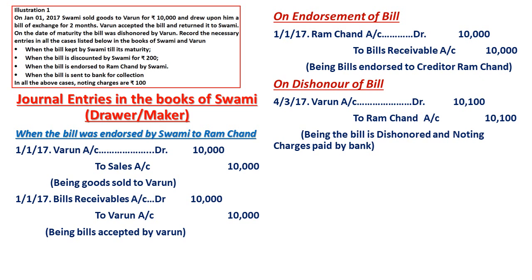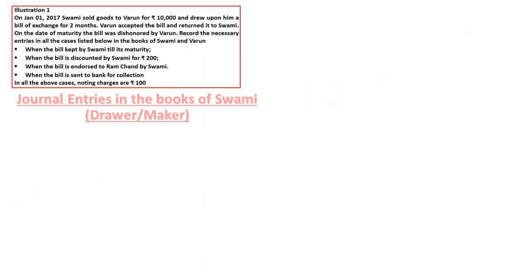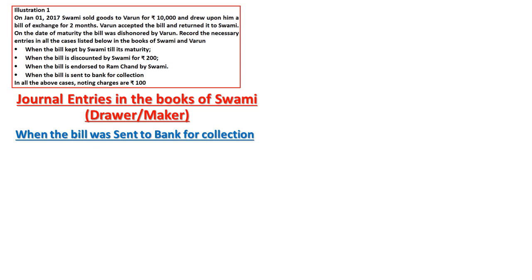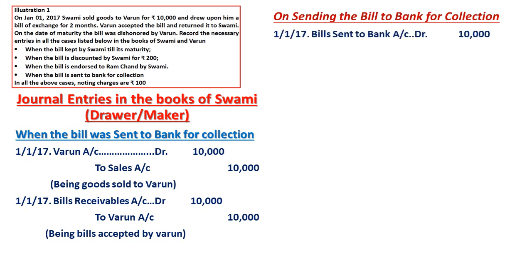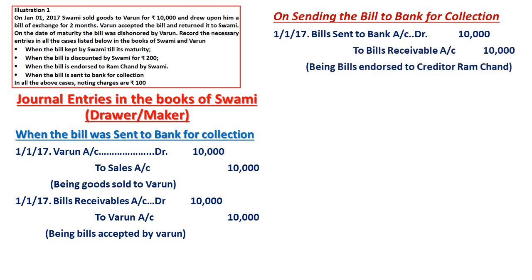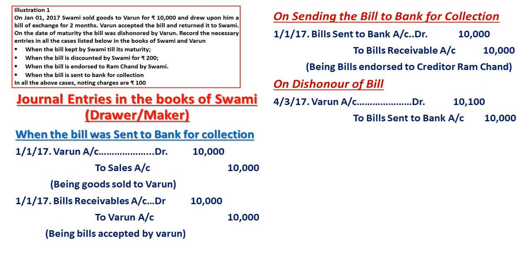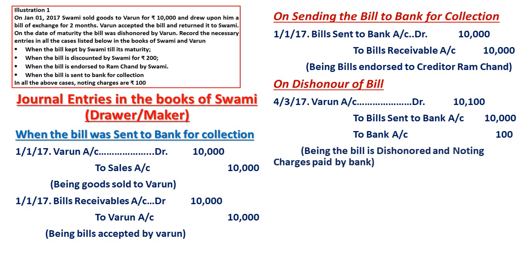Situation four — bill sent to bank for collection. First two entries remain the same. On sending to bank: Bills Sent to Bank Account Dr. To Bills Receivable Account. On dishonor: Varun Account (acceptor/drawee) Dr. To Bills Sent to Bank Account, To Bank Account with the noting charges, being bill dishonored and noting charges paid by bank.